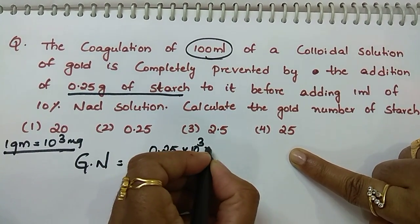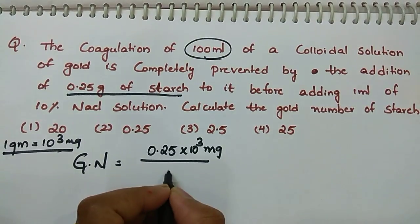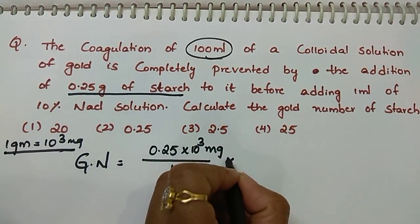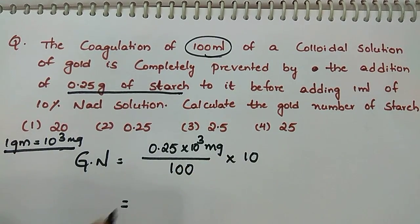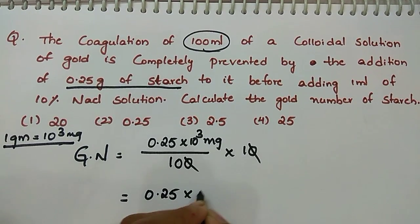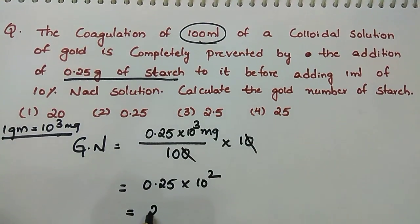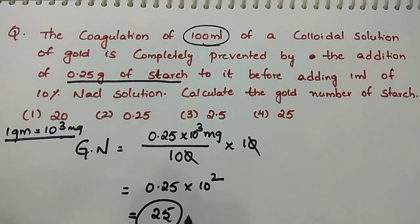How much students? 100 into 10. Clear. Then how much you will get? 0.25 into 10 power of 2, which is equal to 25. That is your gold number.